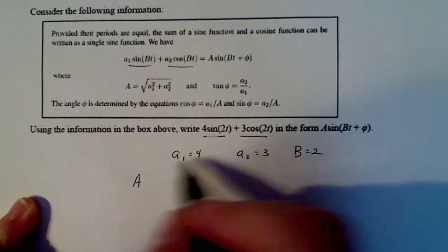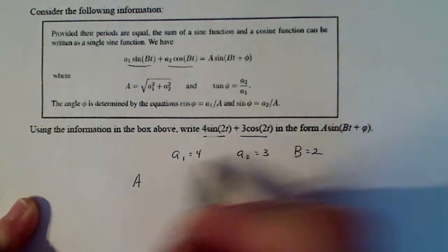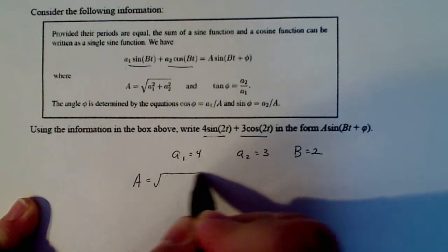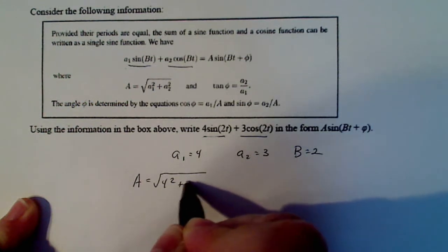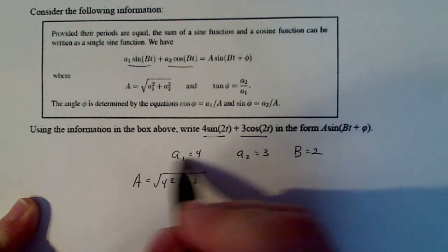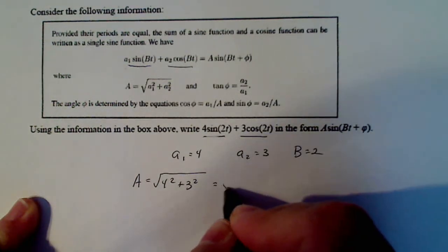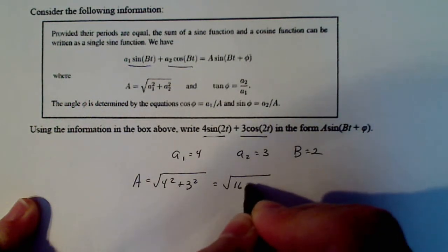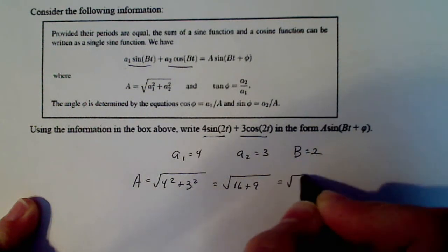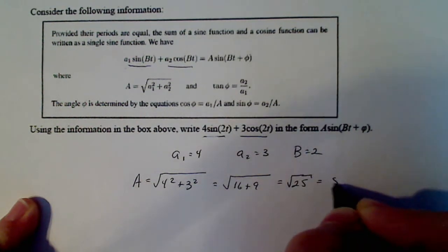So I know that capital A, which is the one that is right here, is equal to the square root of 4 squared plus 3 squared, or a1 squared plus a2 squared. That's going to give me the square root of 16 plus 9, which is the square root of 25, which is 5.